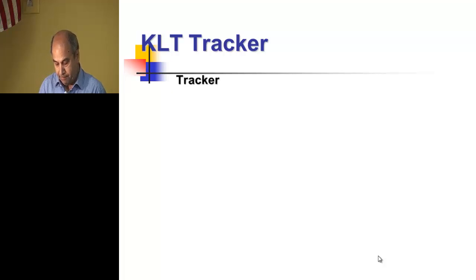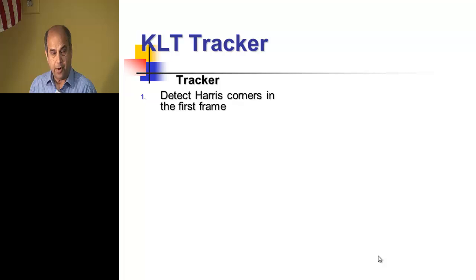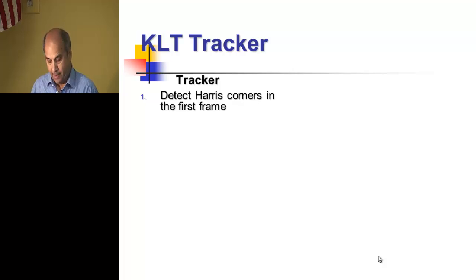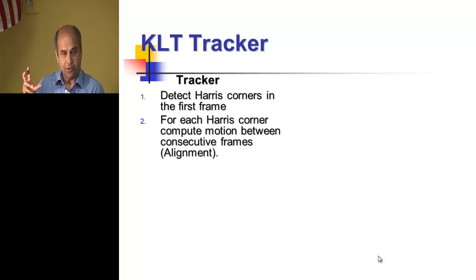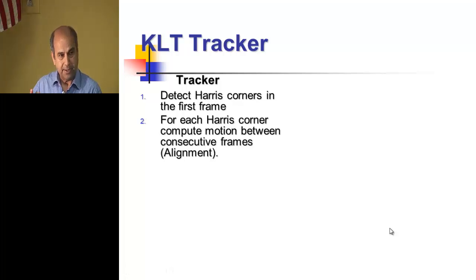The simple tracker works by detecting Harris corner points — which involves the derivative of images, Fx and Fy — computing the structure matrix, finding eigenvalues, and deciding whether there is a significant corner. Then we track these corners by computing the motion between two consecutive frames. That is the main point and the gist of KLT.